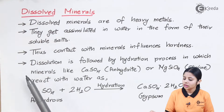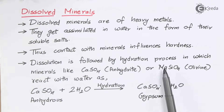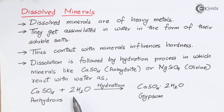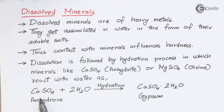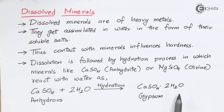Contact with minerals influences hardness through dissolution followed by hydration. Minerals like CaSO4 (anhydrite) react with water: anhydrous CaSO4 is not soluble, but when 2H2O is added, hydration occurs — water clings to CaSO4 to form CaSO4·2H2O. This dot notation represents water of crystallization. The water of crystallization helps CaSO4 form gypsum, a soluble salt, which dissolves in water and converts pure water into hard water.